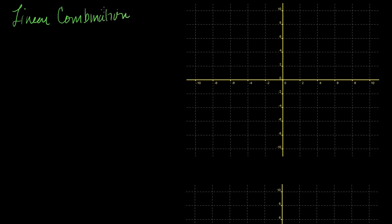A linear combination of vectors is just that — a linear combination. Let's say I have a couple of vectors v1, v2, all the way to vn, and they're all in Rn — some dimension of real space. The idea is fairly simple: a linear combination of these vectors means you just add up the vectors.